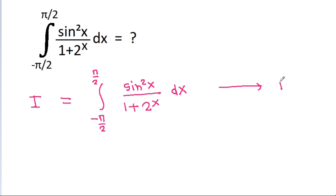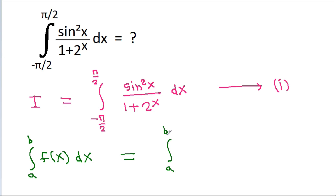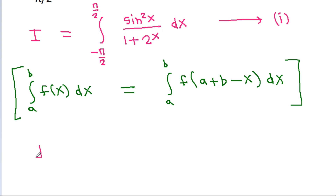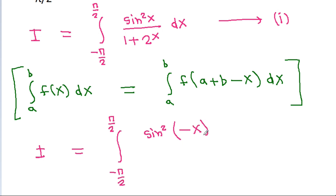We know that the integral from a to b of f(x) dx is equal to the integral from a to b of f(a plus b minus x) dx. So we can write i equal to the integral from minus pi by 2 to pi by 2 of sine square of (minus pi by 2 plus pi by 2 minus x), which simplifies to sine square(minus x), divided by 1 plus 2 to the power (0 minus x) dx.